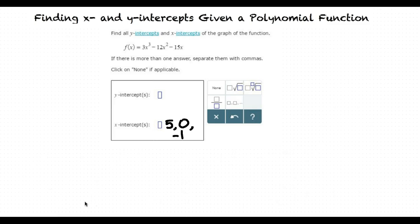So, our x-intercepts are 5, 0, and negative 1, and our y-intercept is 0.